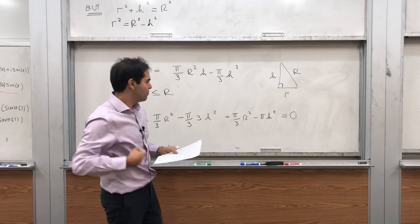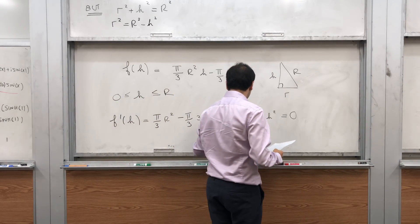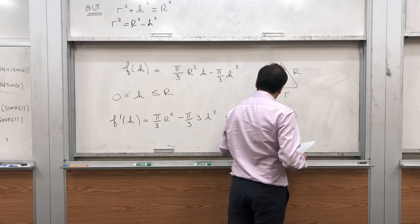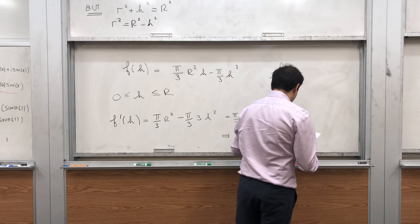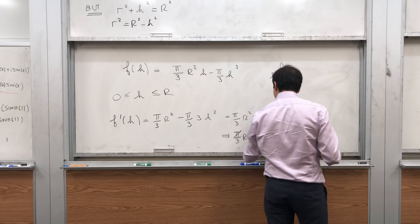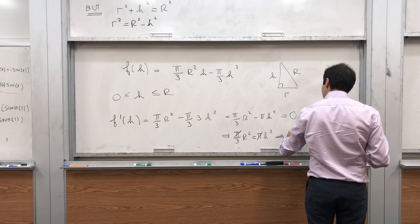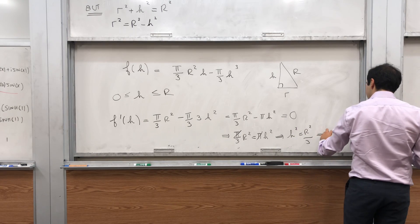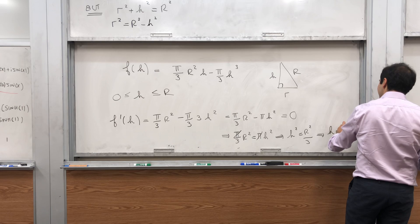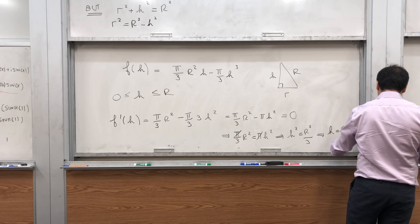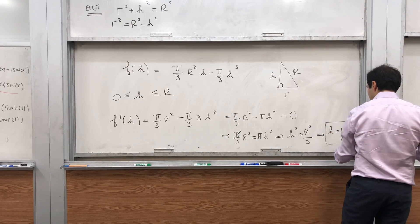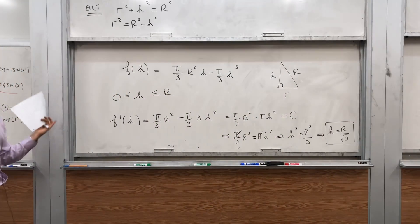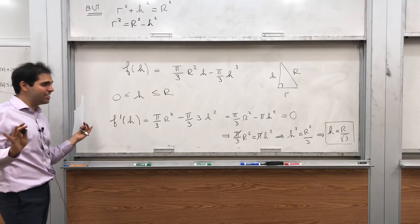And you want to find a critical point. So you let that equal to 0. And we get pi over 3 r squared equals pi h squared. The pi's cancel out. And you get h squared is r squared over 3. In particular, since h is positive, h is r over square root of 3.